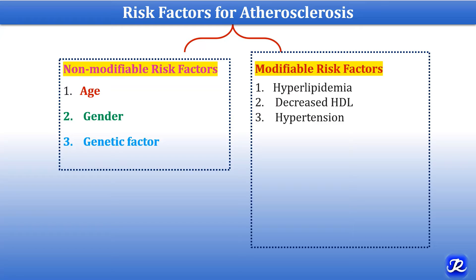Hypertension acts probably by mechanical injury of the arterial wall due to increased blood pressure. If systolic blood pressure is more than 160 mmHg, it is a major risk factor for stroke and coronary artery disease. Roughly, an increase of 10 mmHg reduces life expectancy by 10 years.